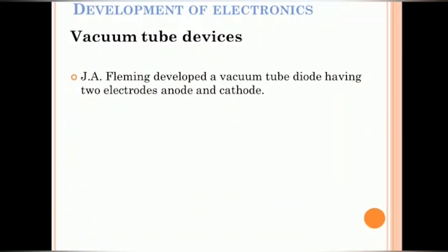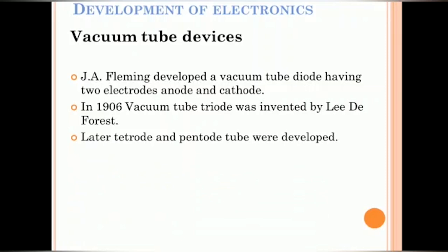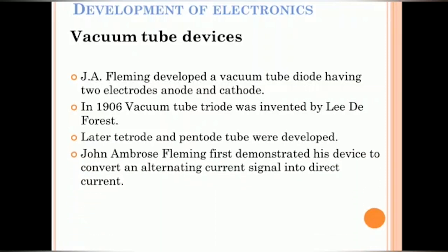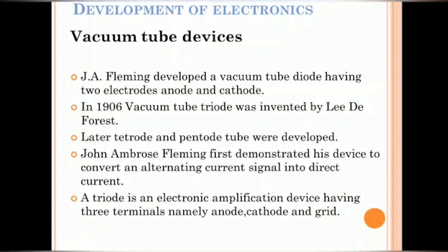Development of Electronics. Here, let us discuss the development of Electronics one by one. So, the first development was vacuum tube devices. Electronics began its origin when J.A. Fleming developed a vacuum tube diode having two electrodes namely anode and cathode. In 1906, vacuum tube triode was invented by Lee De Forest. Later, tetrode and pentode tubes were also developed. John Ambrose Fleming first demonstrated his device to convert an alternating current signal into direct current.